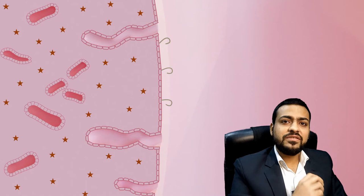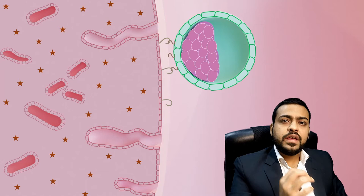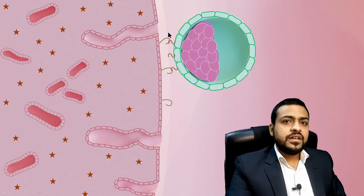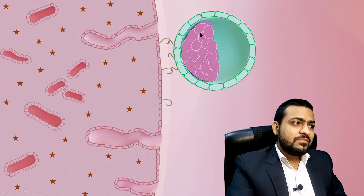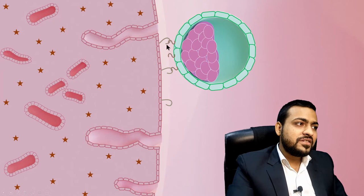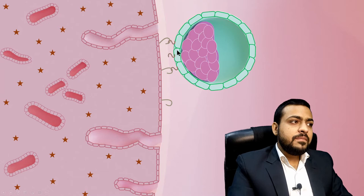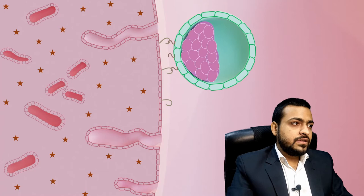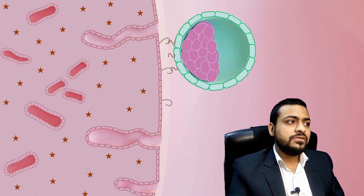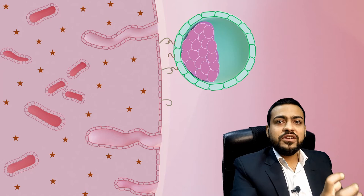At about day five or day six after fertilization the zona pellucida degenerates, and that is called hatching of the blastocyst. As the blastocyst hatches out of the zona pellucida, selectin molecules are exposed on the surface of the cytotrophoblast. These selectin molecules bind with their receptors on the endometrium, and in this way the endometrium of the uterus captures the embryo that was floating into the uterus.